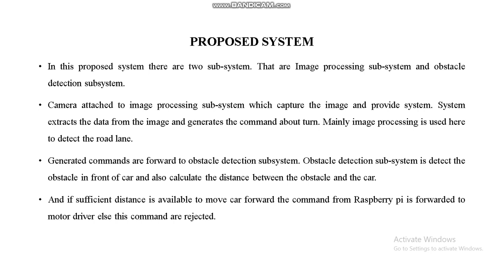The generated commands are forwarded to the obstacle detection subsystem. The obstacle detection subsystem has the ability to detect obstacles in front of the car and also calculates the distance between the obstacle and the car. If sufficient distance is available to move the car forward, the command from the Raspberry Pi is forwarded to the motor driver; otherwise, the command is rejected.